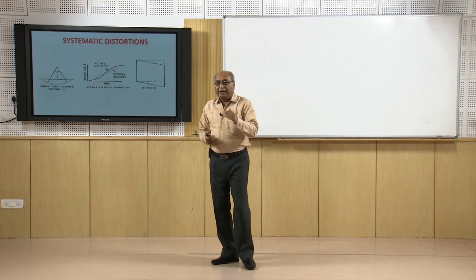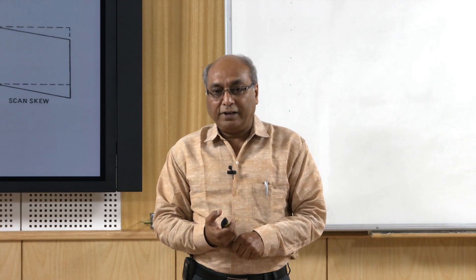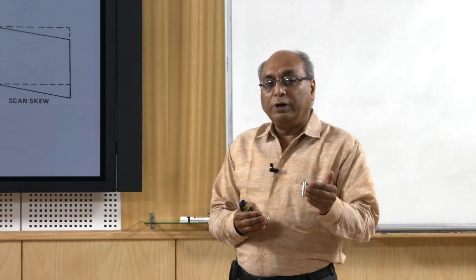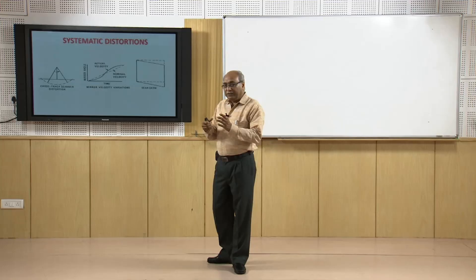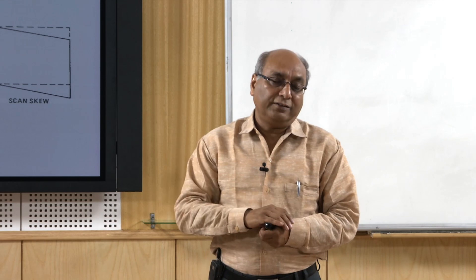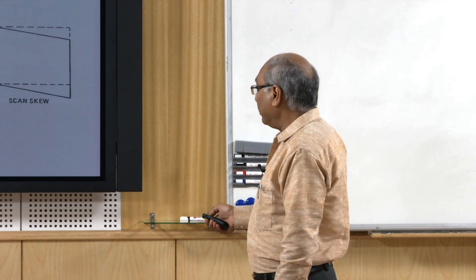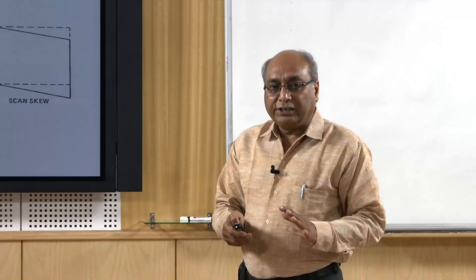In earlier versions when mirror scanners were used — such as Landsat MSS data, which we still use for change detection studies to access older data — the mirrors created velocity variations because they are mechanical devices, causing scan skewness. This skewness also occurs in modern satellite images because during scene acquisition the earth rotates, introducing skewness. The intended area coverage differs from the actual coverage, and these corrections must be applied.